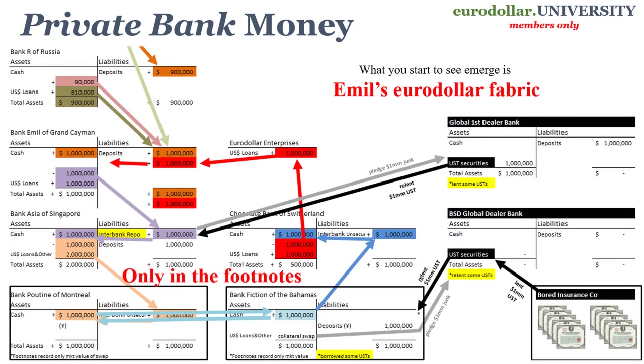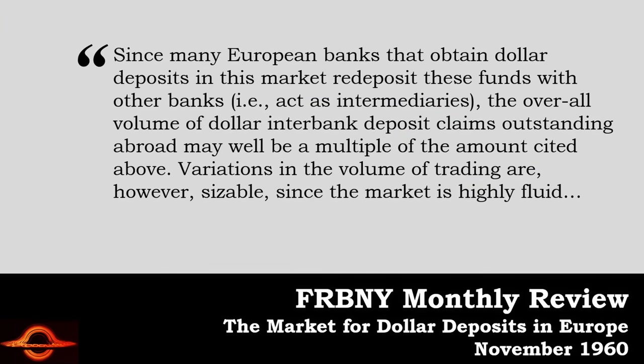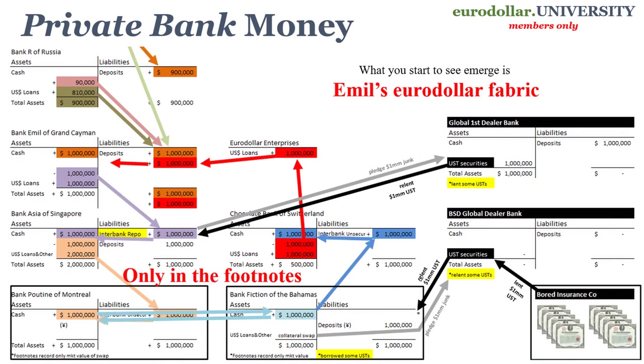But it is a whole lot more complicated and a whole lot more consequential than just some dollars on deposit with banks outside the U.S. Continuing in 1960: since many European banks that obtain dollar deposits in this market re-deposit these funds with other banks, they act as intermediaries. The overall volume of dollar interbank deposit claims outstanding abroad may well be a multiplier of the amount cited above — about a billion dollars in 1960, which was woefully inadequate. Variations in the volume of trading are sizable since the market is highly fluid. So we've got a market where we have these deposits, or really claims on U.S. dollars, at banks around the rest of the world. And then these banks take these dollar deposit claims and re-lend them to other banks. We're building chains of liabilities in U.S. dollar denominations — forming a wholesale interbank network.